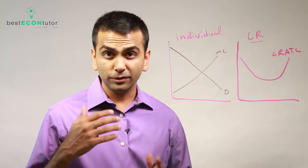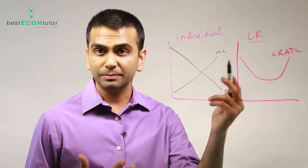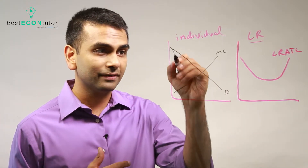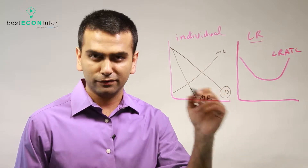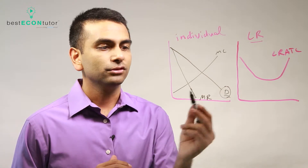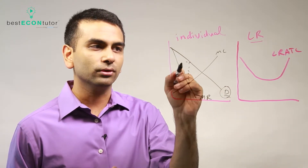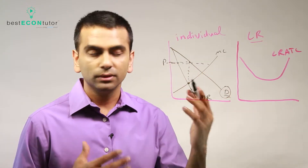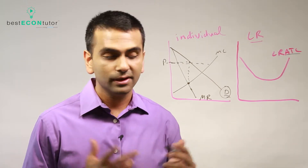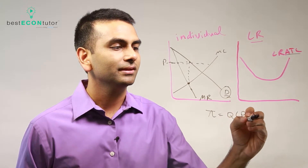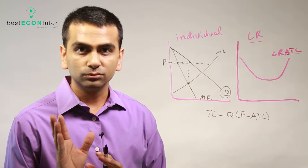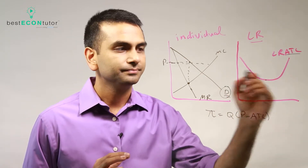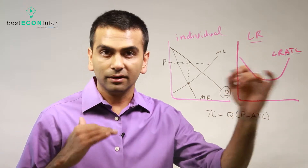Suppose you're in a monopolistically competitive market with your demand curve and MC curve. Finding your point of production works the same as for a monopoly: first find your MR curve — this is your individual demand for your specialized product, not the whole market — then find where MR equals MC. That gives you your quantity, and you read your price off the demand curve. That's the short-run equilibrium.